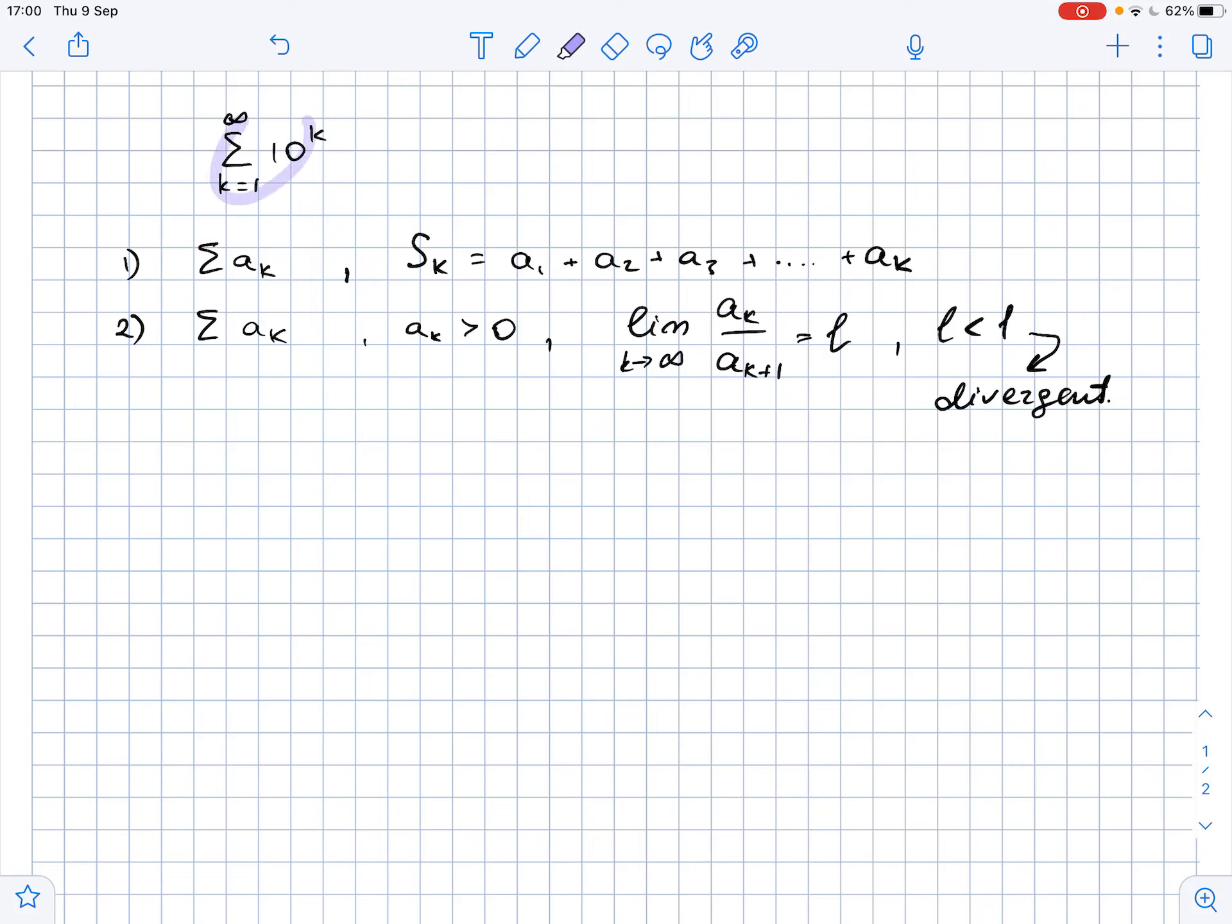So for our series, AK equals 10 to the power of K. So that means that S1 equals A1, so it just equals 10 to the power of 1, so it equals 10.